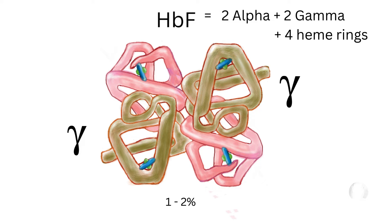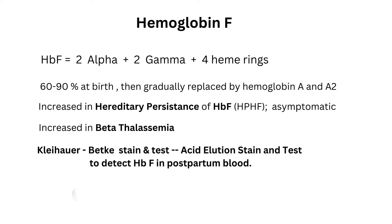Not only is hemoglobin F tough, resisting acidosis during fetal life, it also has a remarkable affinity for oxygen under hypoxic conditions so that it can withdraw oxygen from the maternal circulation in the placenta and deliver it to the baby's tissues. Hemoglobin F is increased in beta thalassemia, and this is the principle behind the Kleihauer-Betke stain and test in blood banking.